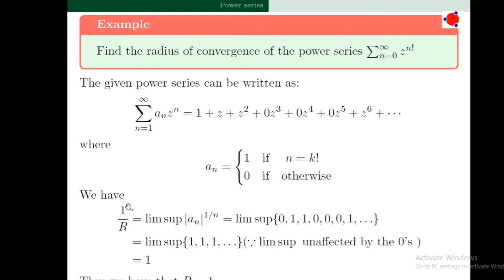The radius of convergence is given by 1/R = lim sup of |a_n|^(1/n), which is the lim sup of the sequence 0, 1, 1, etc. The subsequence of nonzero terms is the constant sequence 1, 1, 1, ... which converges to 1. Therefore the limit superior is equal to 1, and hence the radius of convergence is 1.